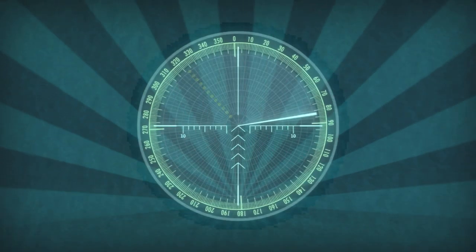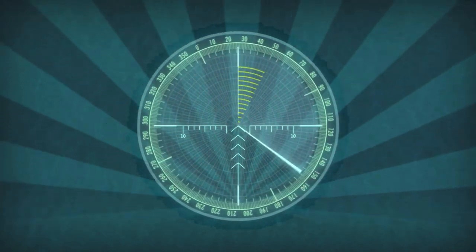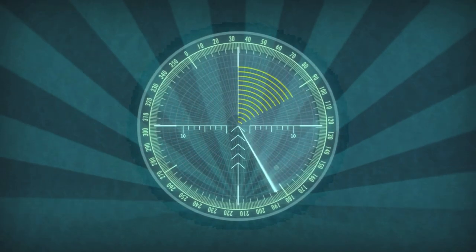If the rescue vessel approaches the SART, the 12 dots will become short arcs. These arcs increase in size if the vessel gets closer.